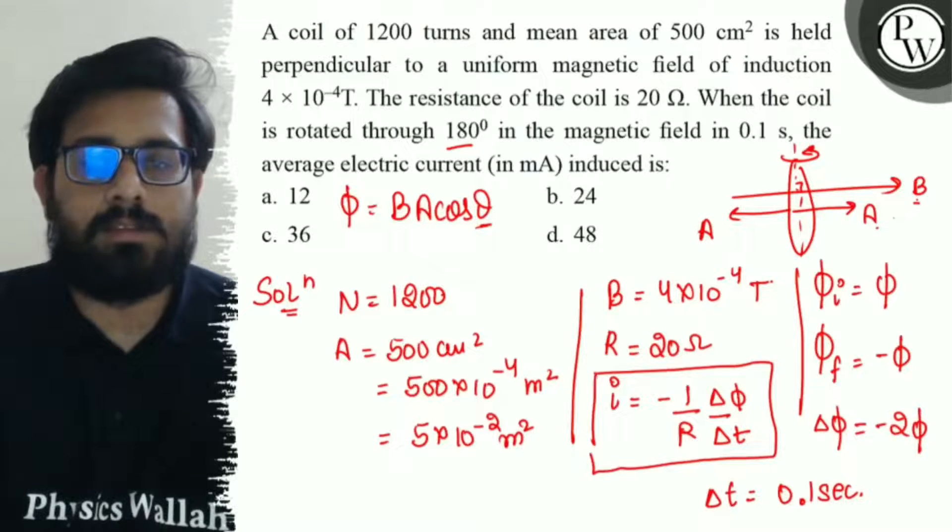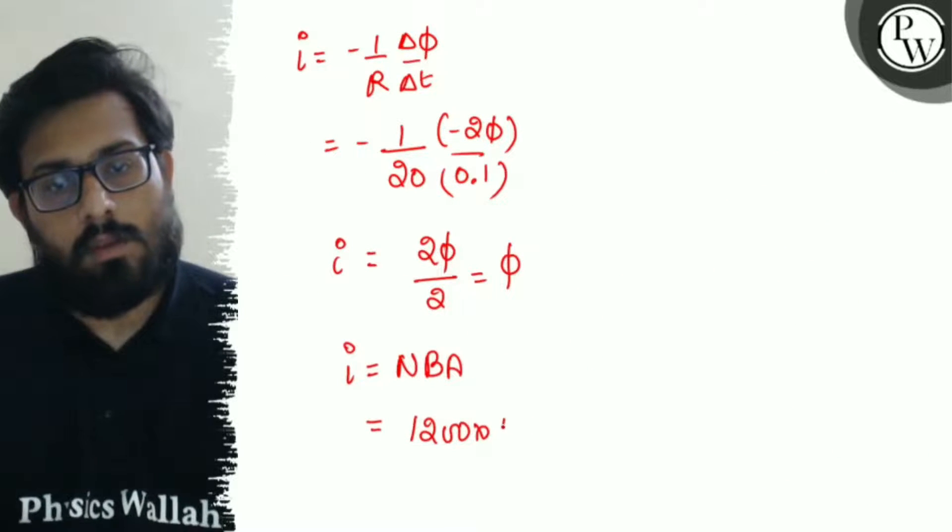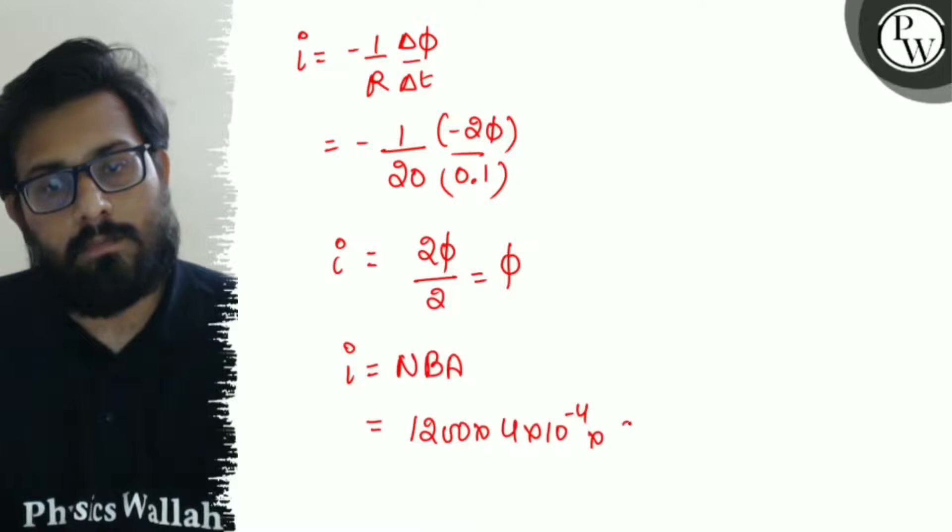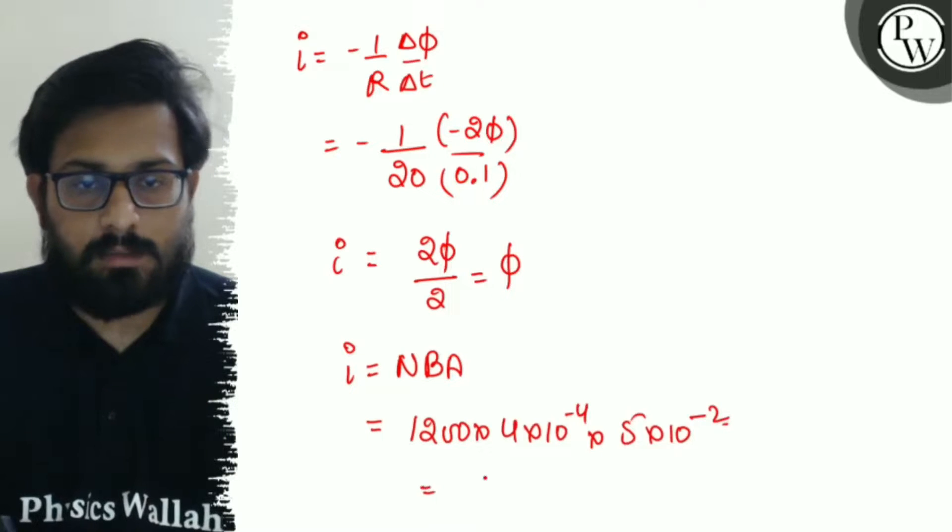Putting the values: 1200×4×10⁻⁴×5×10⁻². 4×5 is 20, so 20×12×10⁻⁴.